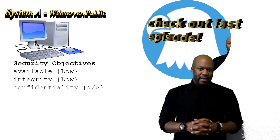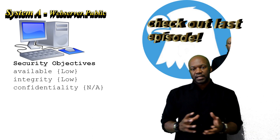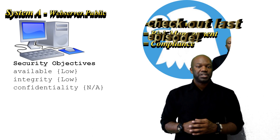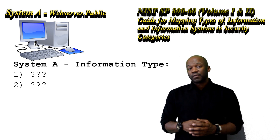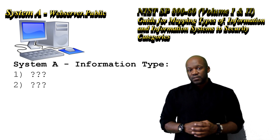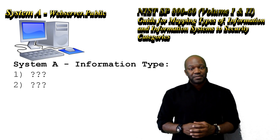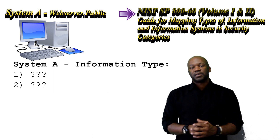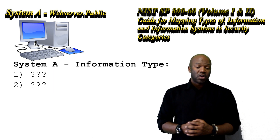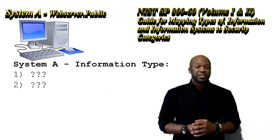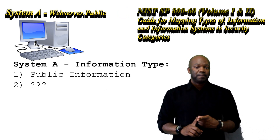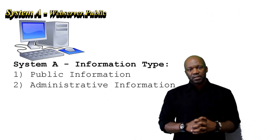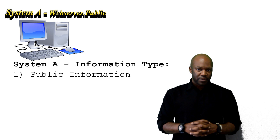So why is it a low impact system? One of the first things you do when determining what categorization a system needs is you look at the actual information type. To learn more about information types, you can go to NIST SP 800-60 and it'll tell you all kinds of information types. For our purposes, we're going to use two information types: public information and administrative information. Let's look at the public information type first.